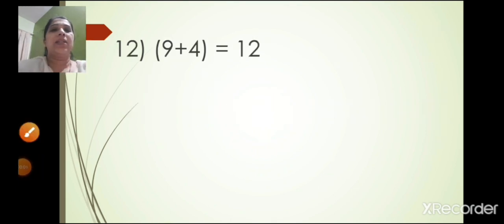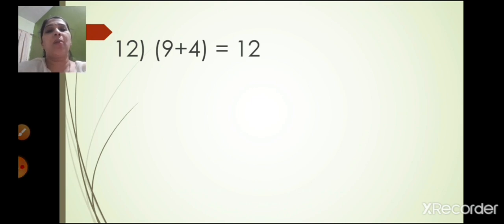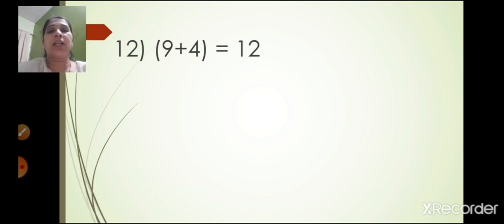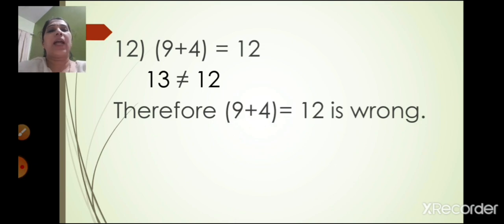The twelfth one: 9 plus 4 is equal to 12. Now 9 plus 4 is 13, and the other number is 12. So 13 is not equal to 12. Therefore 9 plus 4 is equal to 12 is wrong.